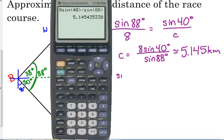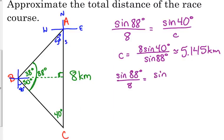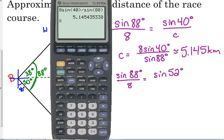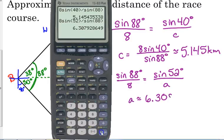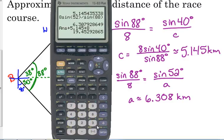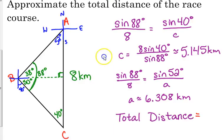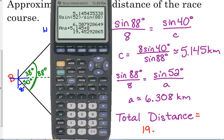And then, let's see here what we change in our law of sines. The angle that we use, our other angle was 52. And that would give us side A. So, 8 sine of 52 divided by the sine of 88. Side A is approximately 6.308 kilometers. So, when we add up all of our sides, we get that the total distance is 19.4 kilometers.